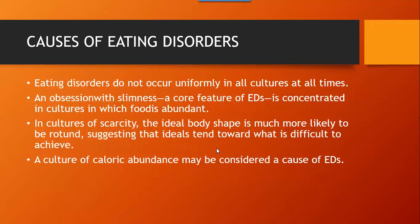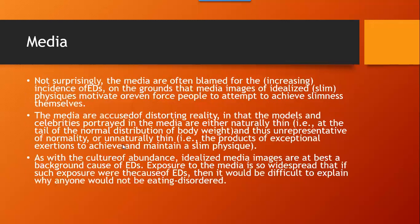Eating disorders do not occur uniformly in all cultures at all times. An obsession with slimness — the core feature of eating disorders — is concentrated in cultures in which food is abundant. In cultures of scarcity, the ideal body shape is much more likely to be rounder, suggesting that ideals tend toward what is difficult to achieve. A culture of caloric abundance may be considered a cause of eating disorders.